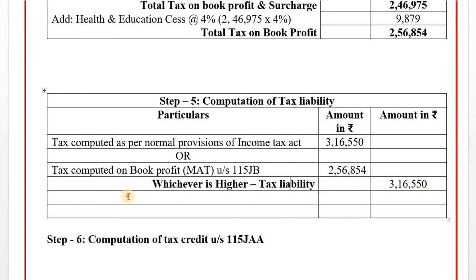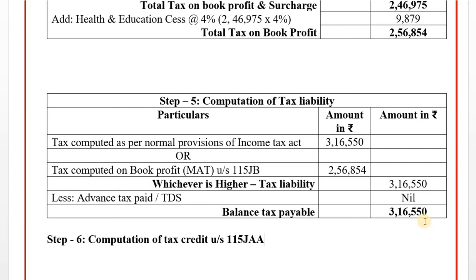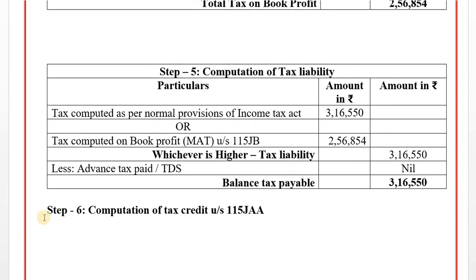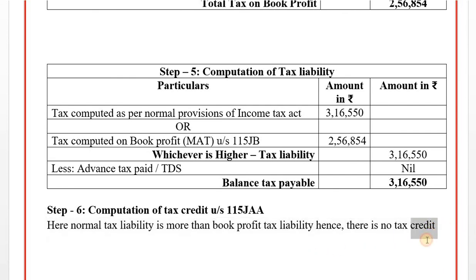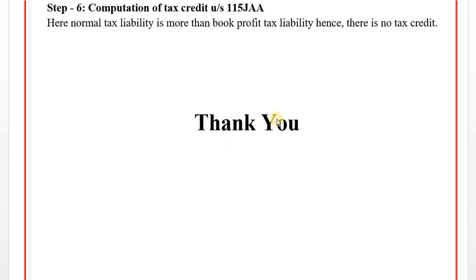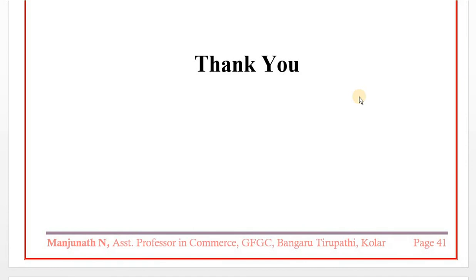Step 5: Tax as per normal provisions: Rs. 3,16,550. Tax as per book profit under Section 115JB: Rs. 2,56,854. Whichever is higher is the tax liability: Rs. 3,16,550. Less advance tax or TDS - nil. Balance tax payable: Rs. 3,16,550. Since normal tax liability is more than book profit tax liability, there is no MAT tax credit applicable. We have solved Problems 14 and 15, demonstrating how to calculate tax liability of a corporate assessee following all 6 steps.